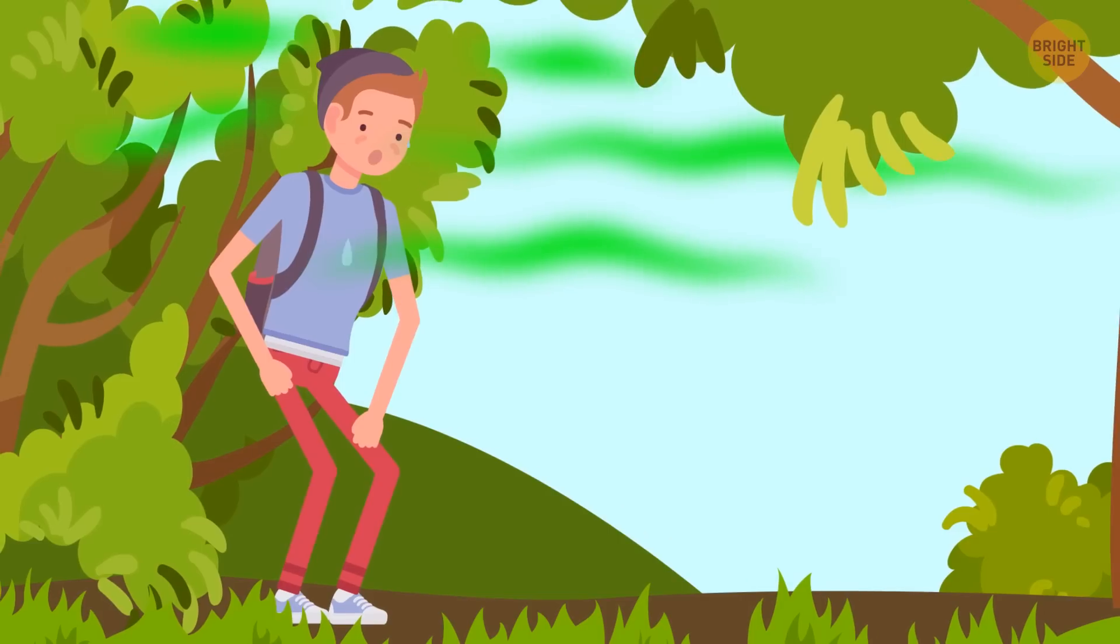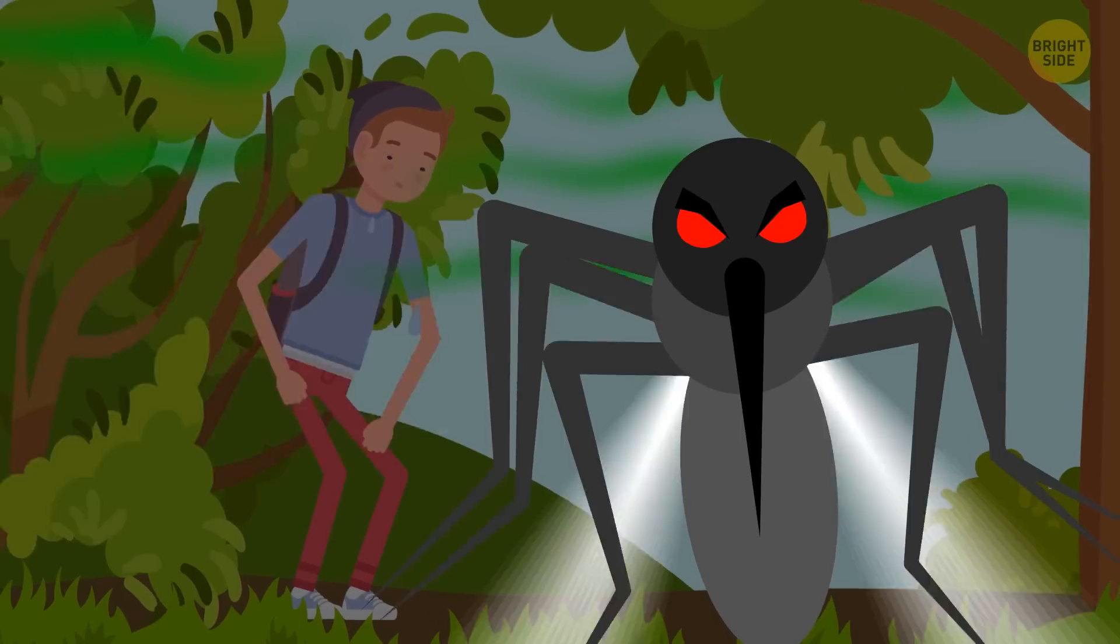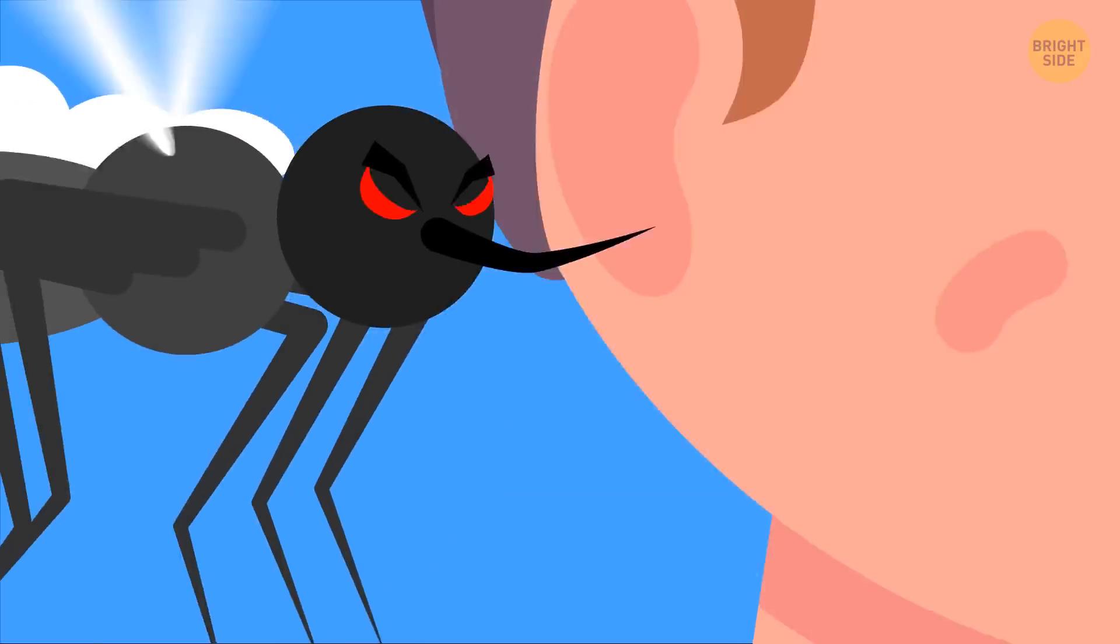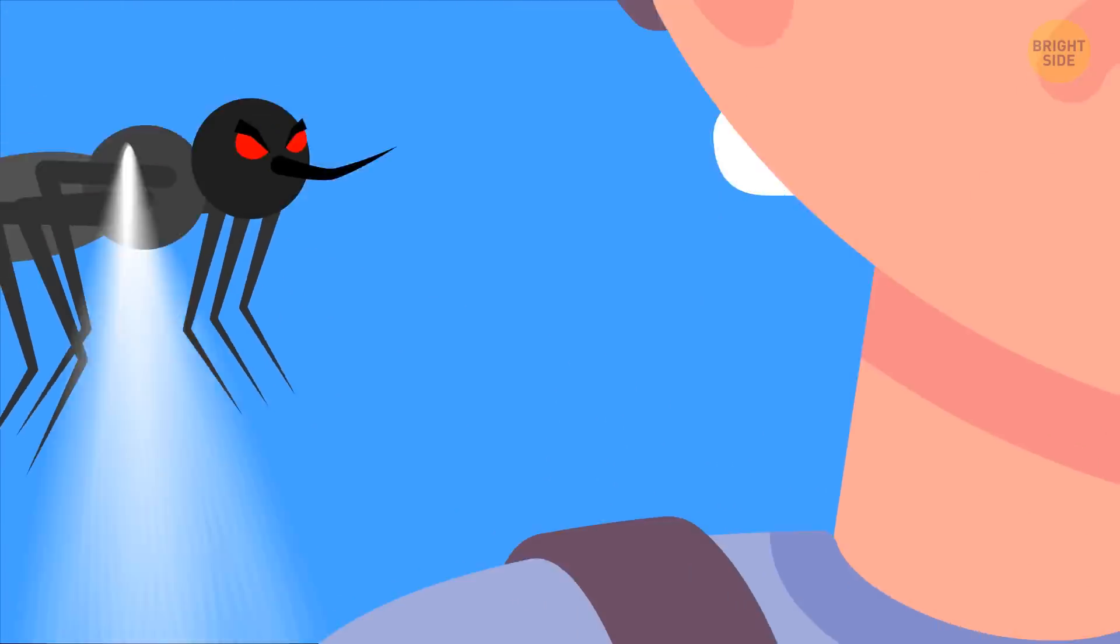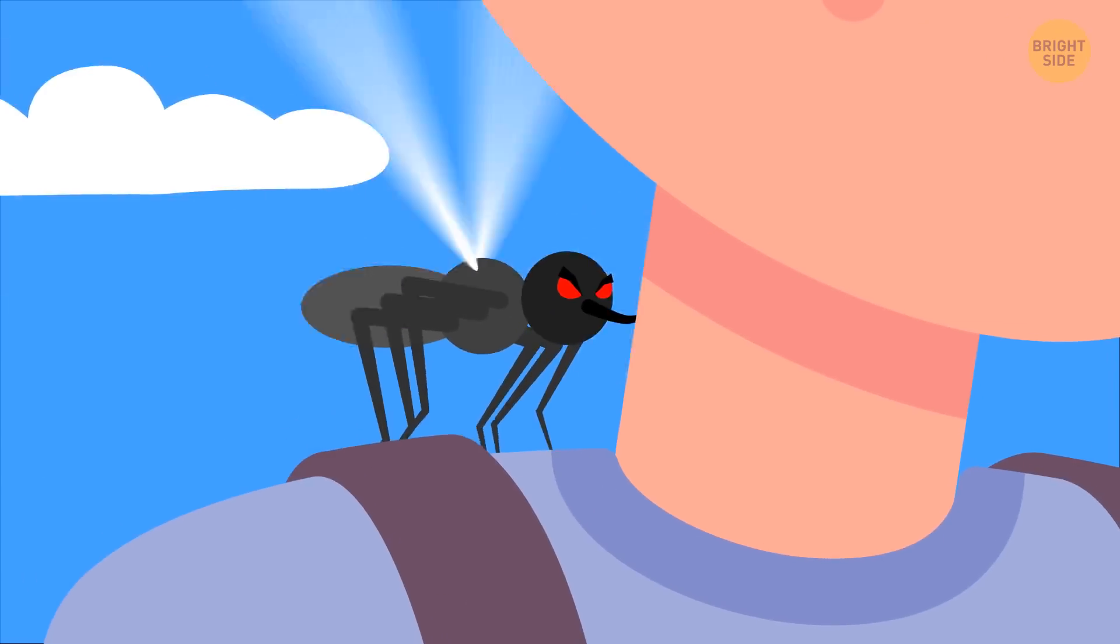He sweats and emits a smell attractive to insects. One little mosquito flies up to him. It buzzes next to his ear, sits on his sweaty neck, and bites.